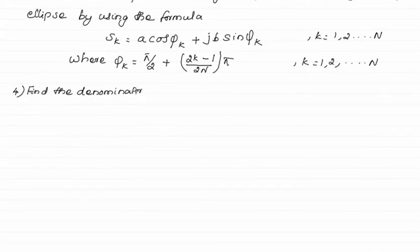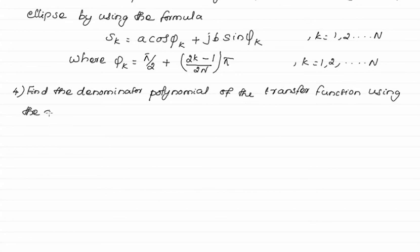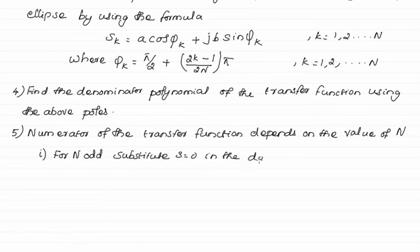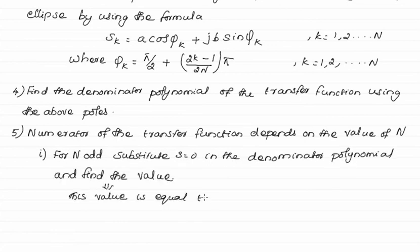The fourth step is to find the denominator polynomial of the transfer function using the above poles, that is Sk. The fifth step is to find the numerator of the transfer function, which depends on the value of n. For odd n, substitute S = 0 into the denominator polynomial and find the value — this value equals the numerator of the transfer function.